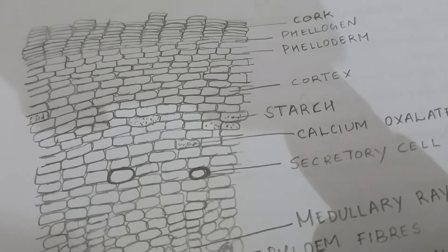After the periderm portion we can find the cortex which consists of several layers of thin-walled tangentially elongated cells containing reddish-brown matter.